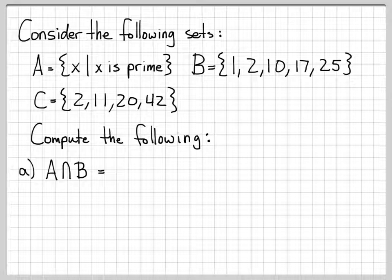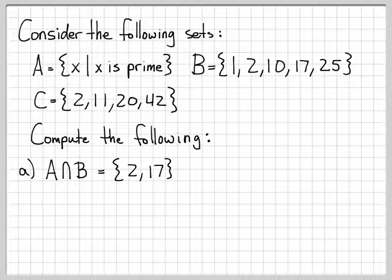We go down the short list for B and ask: is this element of B also an element of A? If the answer is yes, it will also be an element of A intersect B. Is 1 a prime number? No — 1 is not defined as a prime number. Is 2 a prime number? Yes. Since 2 is in B and is also prime, it's also in A, so 2 is a common element between A and B and will be in the intersection.